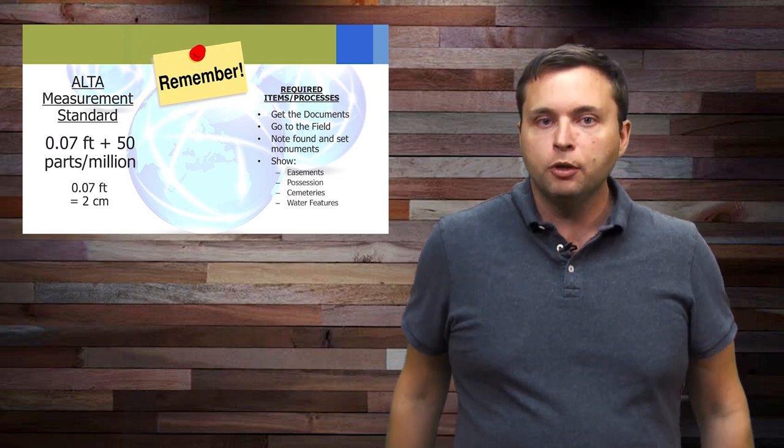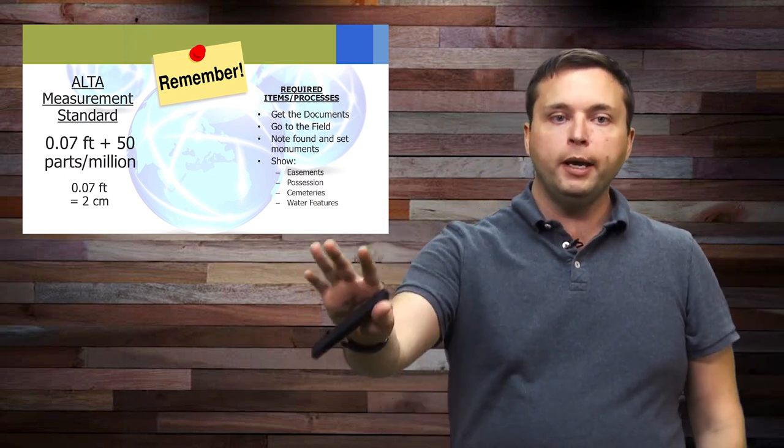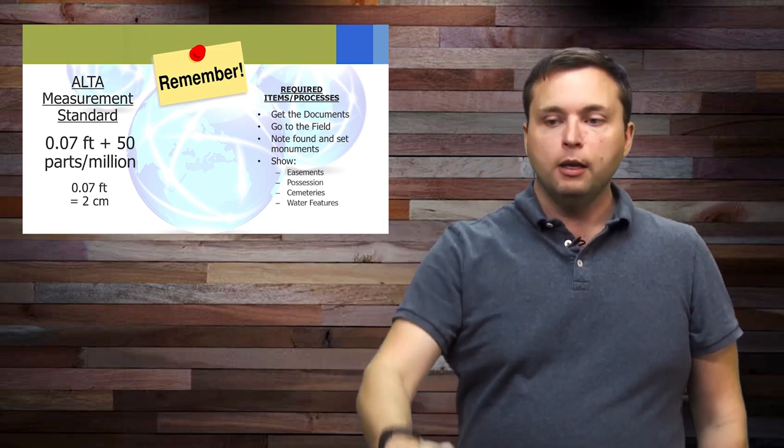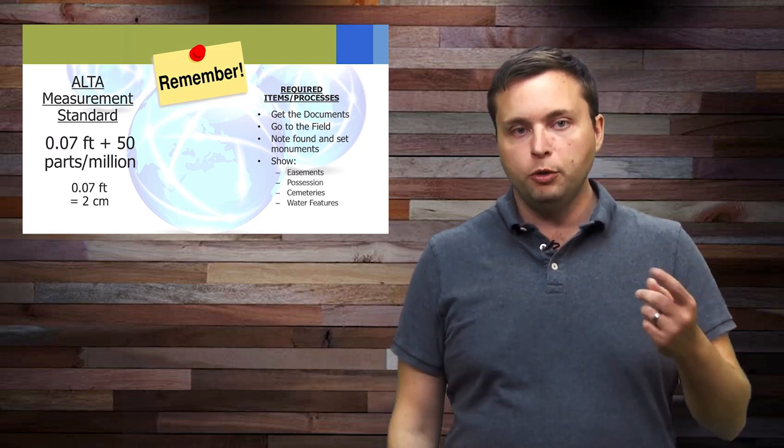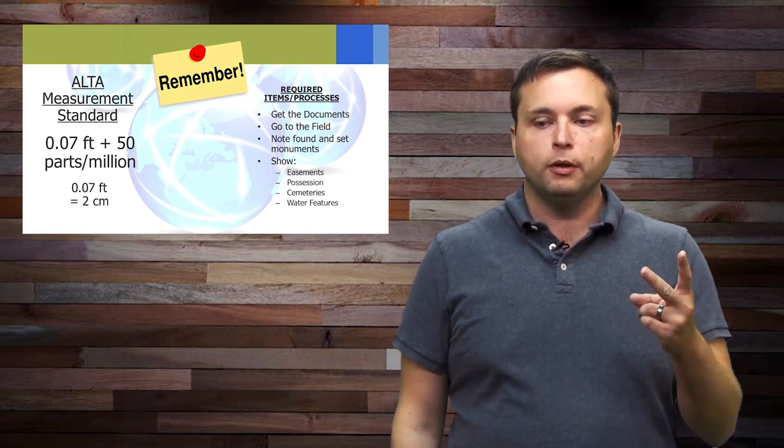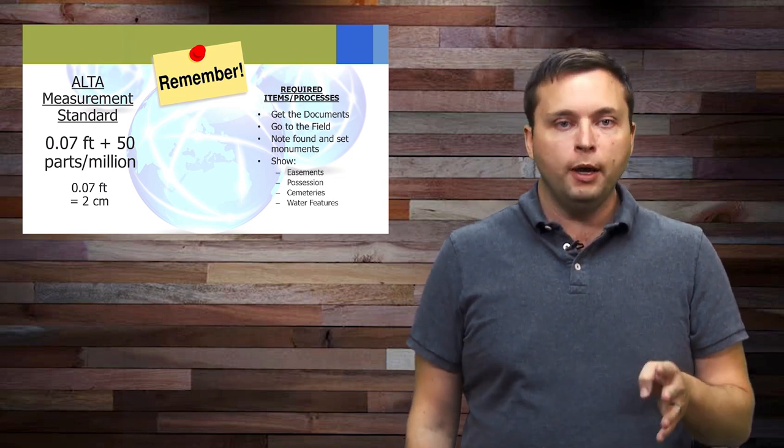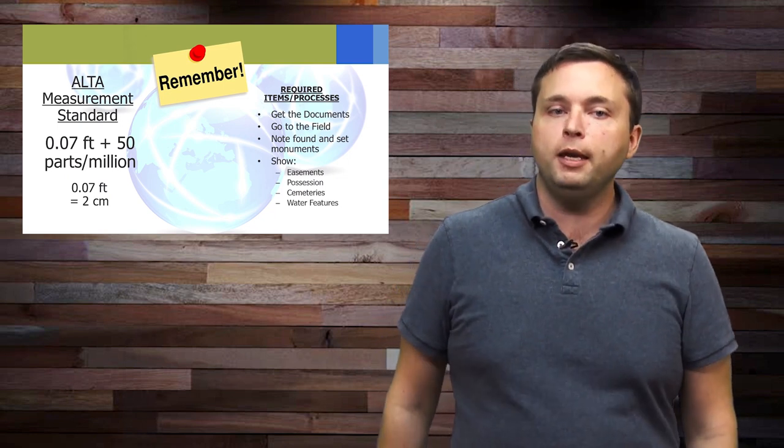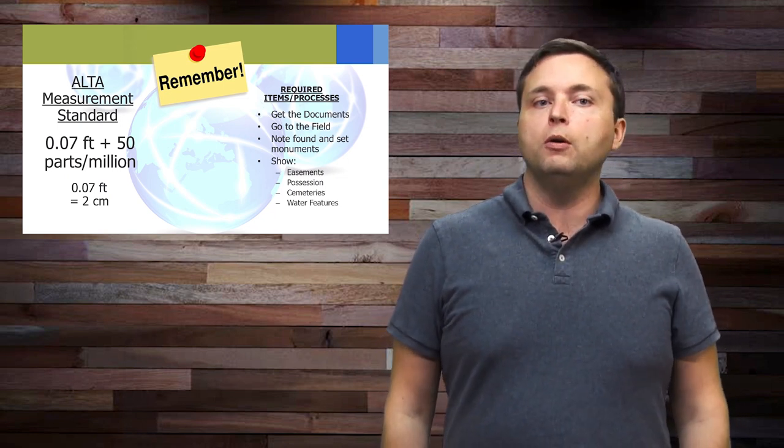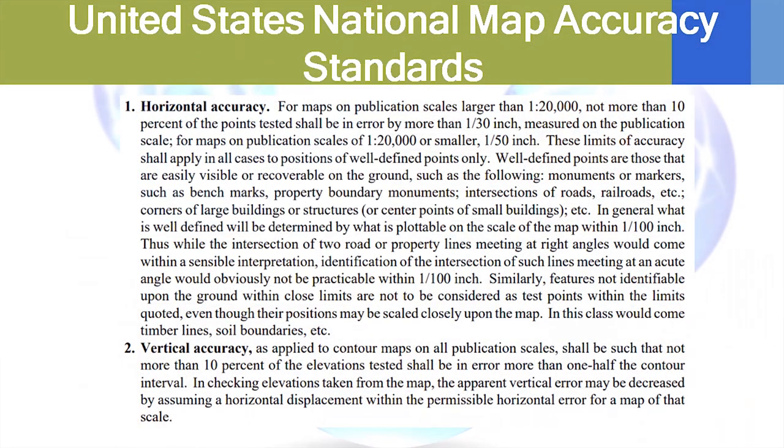Another thing is what items are required for an ALTA survey and what items are optional. Basically, what's required of an ALTA survey is do your record research, do your field work, find and set monuments, and show a bunch of stuff. But if your client wants a Cadillac ALTA survey, they can pick from Table A. You need to go download the ALTA standards and know what's optional, know what's required.